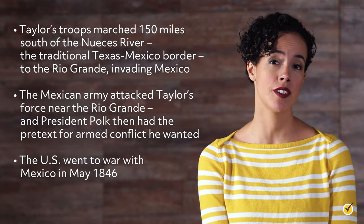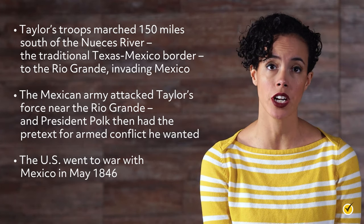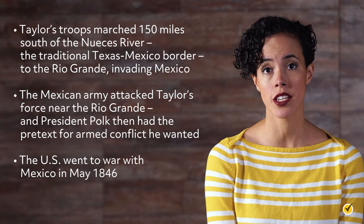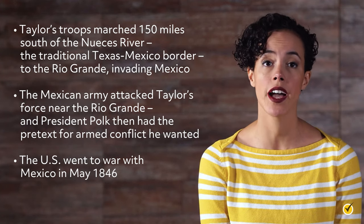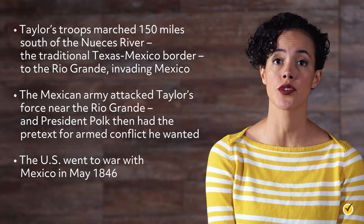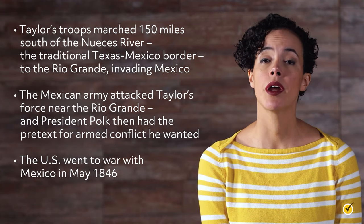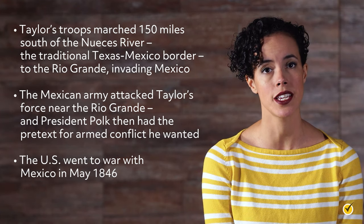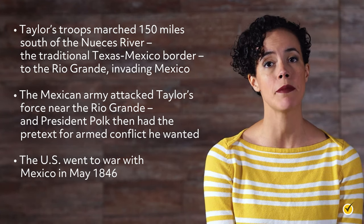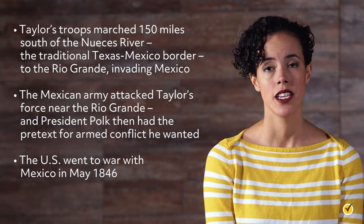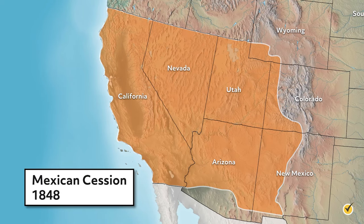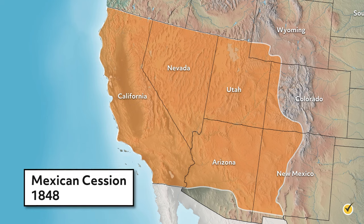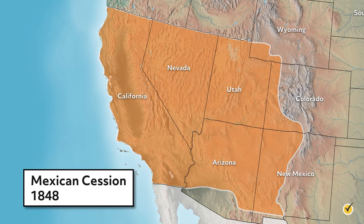Taylor's troops marched 150 miles south of the Nueces River — the traditional Texas-Mexico border — all the way to the Rio Grande, in essence invading Mexico. Justifiably, the Mexican army attacked Taylor's force near the Rio Grande, and President Polk then had the pretext for armed conflict he wanted. The U.S. went to war with Mexico in May 1846. The fighting lasted roughly two years and led to the U.S. taking vast territories from Mexico in the Treaty of Guadalupe Hidalgo in 1848.